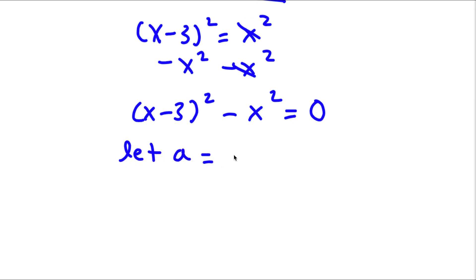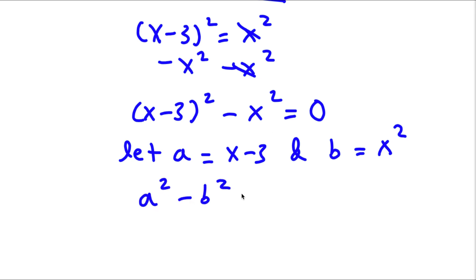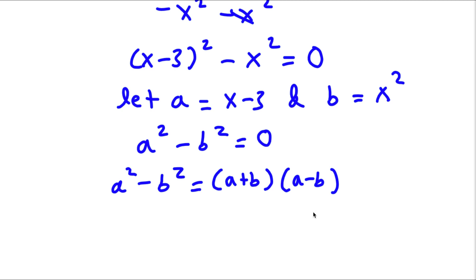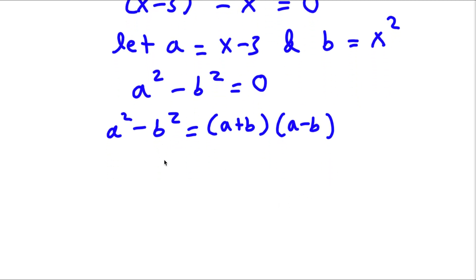We can let the variable a equal x minus 3, and we can let the variable b equal x. So now if I substitute these values in for a and b, I have a squared minus b squared is equal to zero. Now, if I have something in the form a squared minus b squared, this is actually equal to a plus b times a minus b. So now I will have a plus b times a minus b is equal to zero.